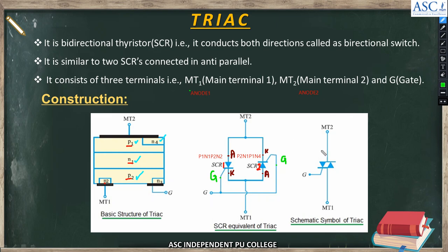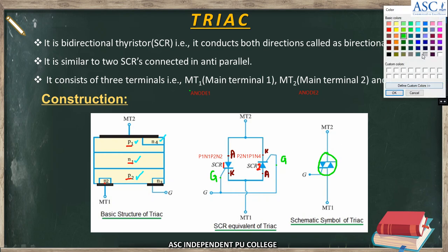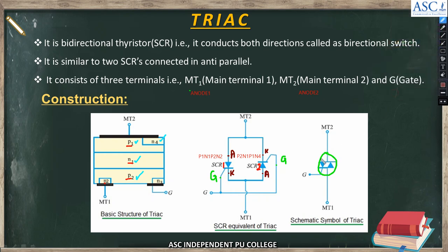The circuit symbol of TRIAC is as shown here, consisting of SCR1 and SCR2 in anti-parallel. The gate layer is mentioned as the N3 layer. This is the basic structure of TRIAC, along with its equivalent diagram using two SCRs and its circuit symbol.